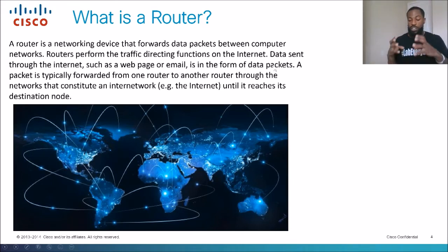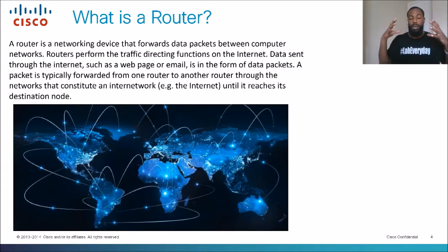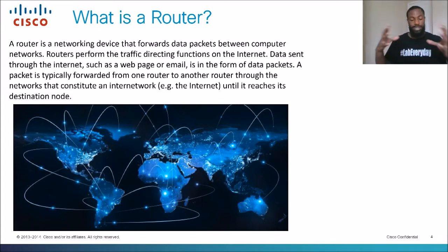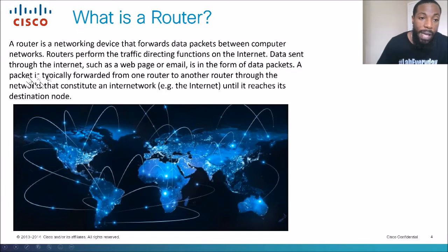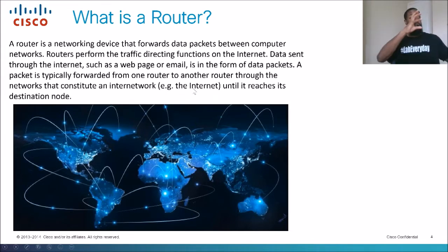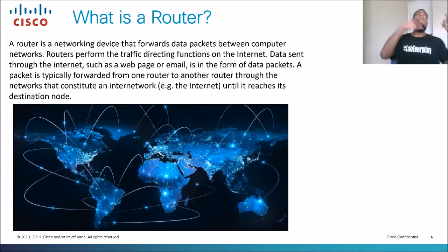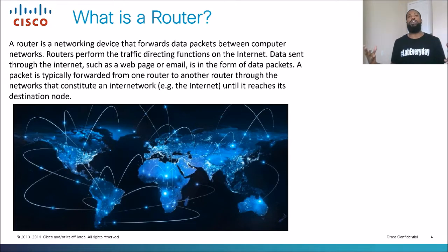All the information is sent in little packets — kind of like little envelopes — but we're not going to get too deep into it today. We're just going to do a high-level overview of what packets are and what routers do with them. A packet is typically forwarded from one router to another through the networks that constitute an internetwork or the internet. There are hundreds, thousands, millions of routers on the internet that basically take traffic and send it off to another network until it reaches the destination node.